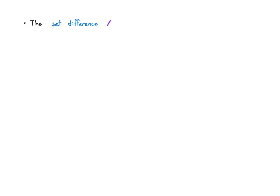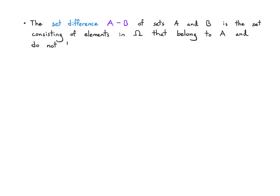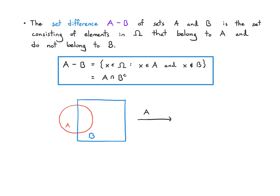Finally, let's introduce the set difference. A minus B is the notation — we take the elements of the universal set that belong to A and also do not belong to B. So I'm taking away the elements of A that belong to B, looking only at elements that are in A and not in B. It could also be written as A intersected with the complement of B. Visually, if I have a circle and a square, the left half of circle A not included in B is what's in the set difference.